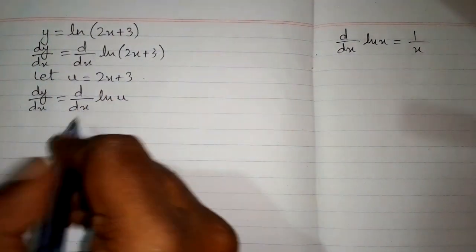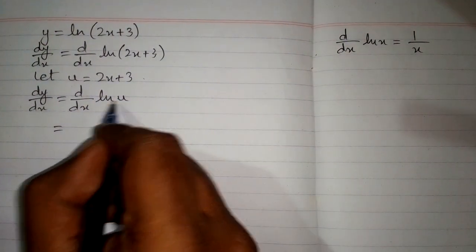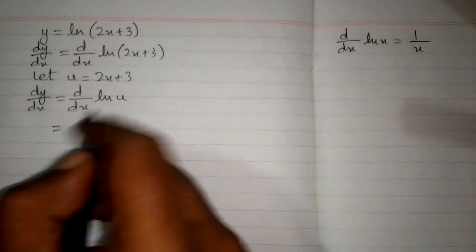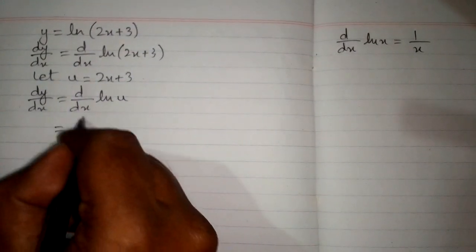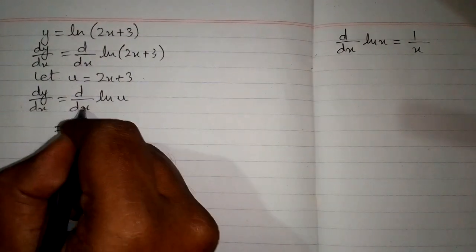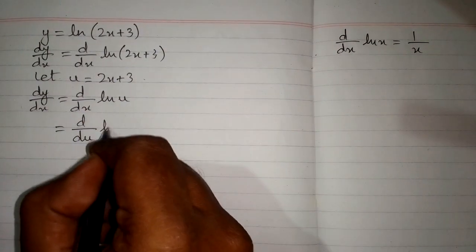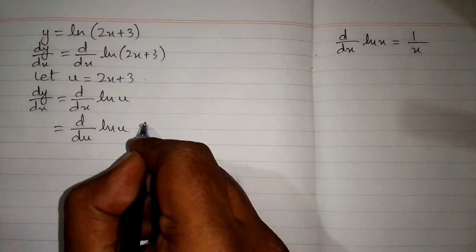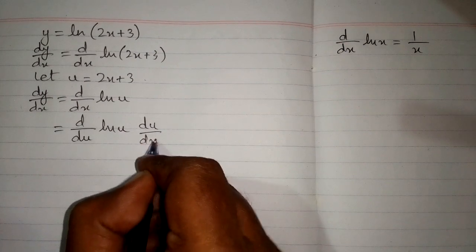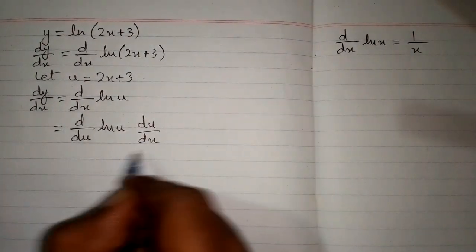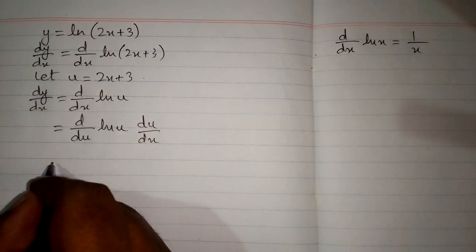Now again we don't have the same variable here. So we can write du in place of this dx in order to differentiate ln of u, and then multiply by du by dx. This is the chain rule of differentiation.